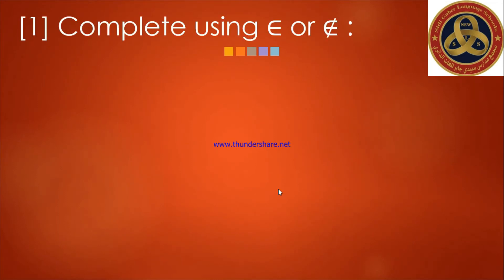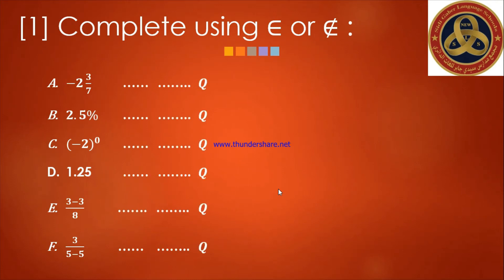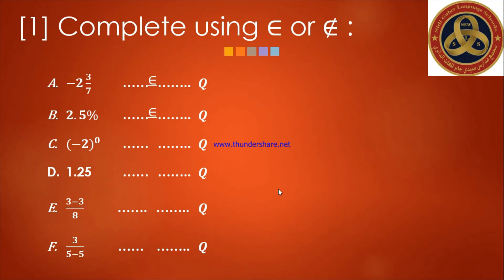Exercise one: complete using 'belong' or 'doesn't belong.' Letter A: negative two and three-sevenths is a mixed number, and every mixed number belongs to Q. Letter B: two point five percent — since percent is a form of a rational number, it belongs to Q. Letter C: negative two to the power zero equals one, because any number to the power zero equals one, and one is a whole number and thus a rational number — so it belongs.